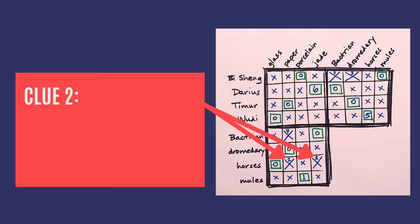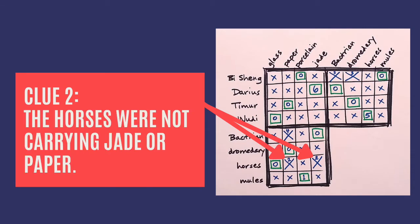We want the solver to make these two x's. A simple clue is: the horses were not carrying jade or paper. There are many ways to make the phrasing more interesting. You can get ideas on my video, 25 ways to write logic puzzle clues.